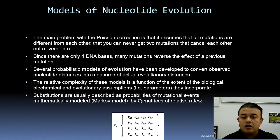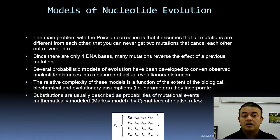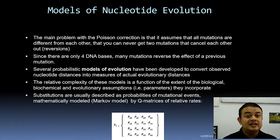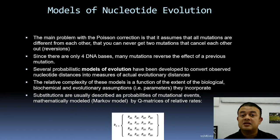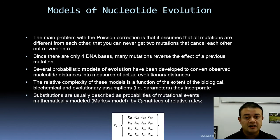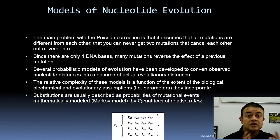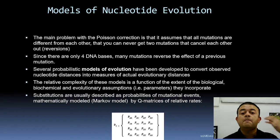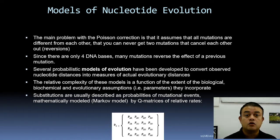Since there are only four DNA bases, many mutations reverse the effect of the earlier one — multiple substitutions at the same site. That needs to be corrected. Several probabilistic models of evolution have been developed to convert this observed distance into measures of actual evolutionary distance.